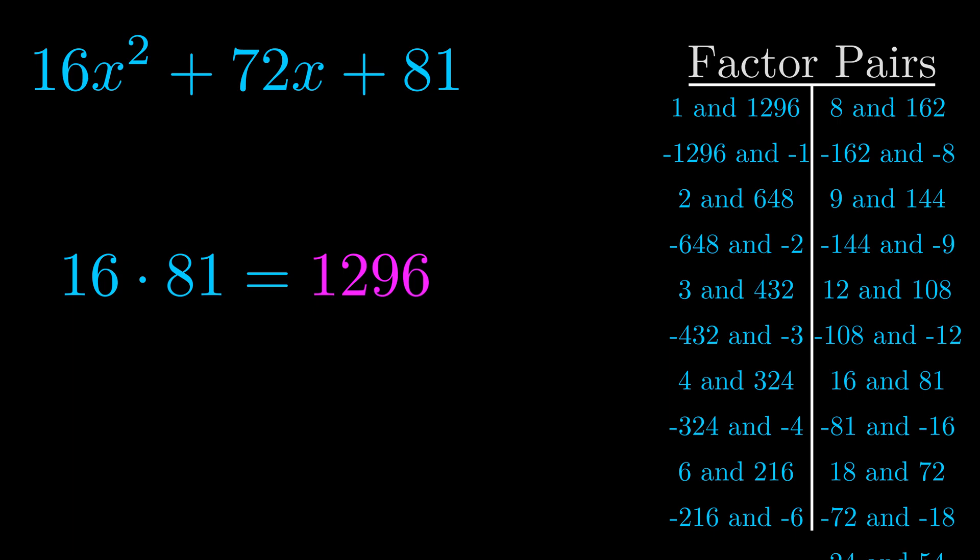The b value is the coefficient on the x term. That's the middle term, the one that we haven't done anything with yet. And really this is the only factor pair that we need.